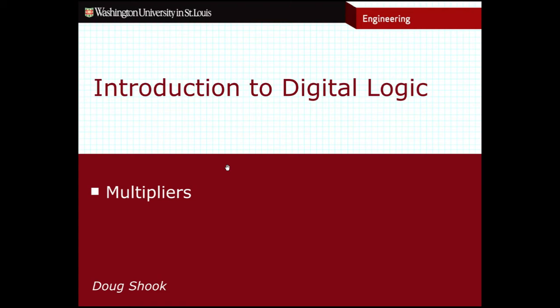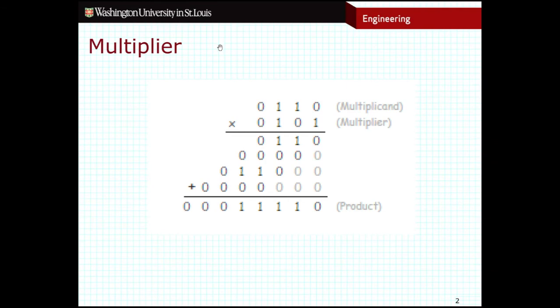First, let's take a look at how multiplication works. So here is an example of binary multiplication. And what you should notice is that it's actually a lot like multiplication with decimal values.